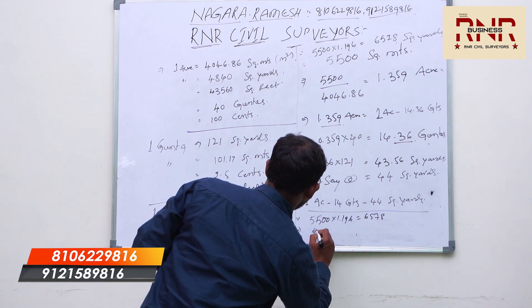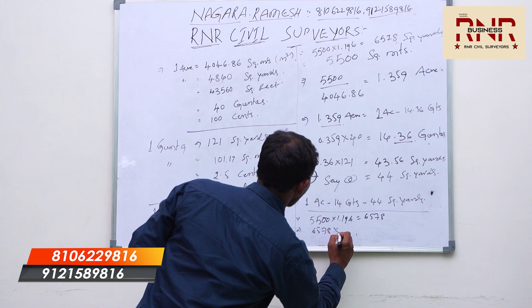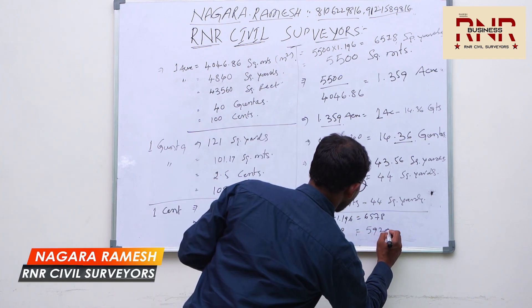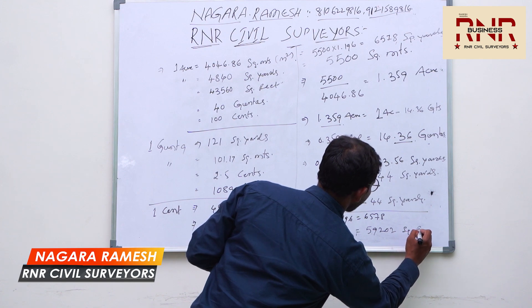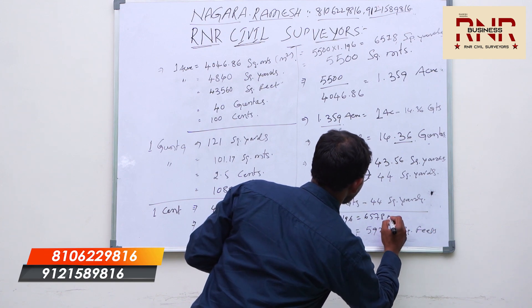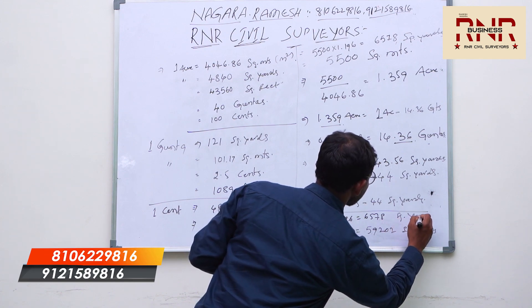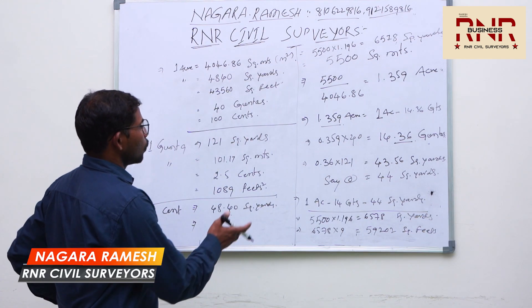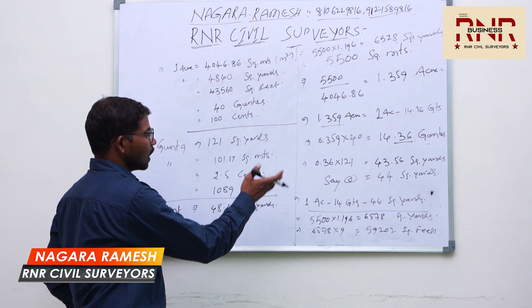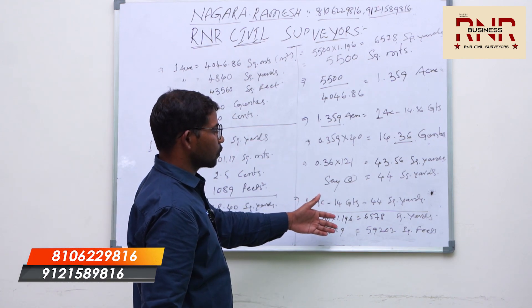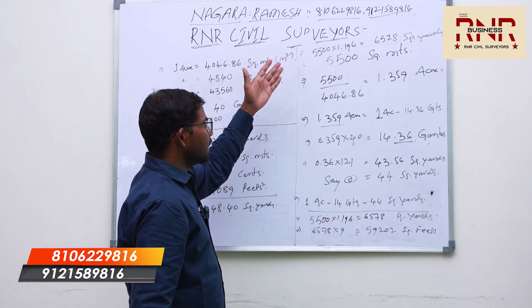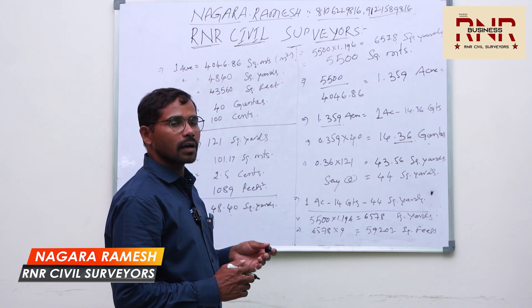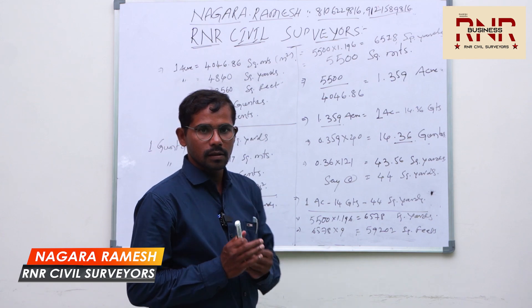6578 into 9 equals square feet. You can perform these conversions directly. Namaste.